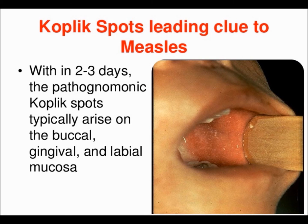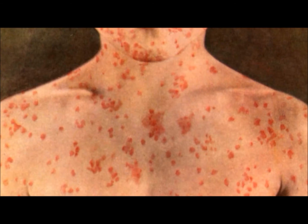Koplik spots are pathognomonic of measles and consist of bluish-white dots, approximately one millimeter in diameter, surrounded by erythema. These develop on the buccal mucosa approximately two days before the rash appears.